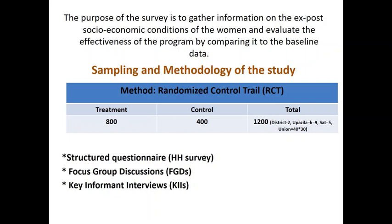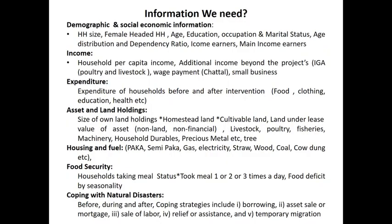Different types of information were collected using various indicators. Demographic and socioeconomic data included household size, female-headed households, age and education of respondents, occupation, marital status, dependency ratio, number of income earners, and main income earner of the family. Income data included household per capita income, additional income from the project such as IGA, livestock, wage payments, and small business income.